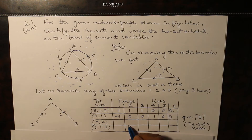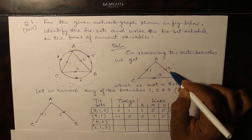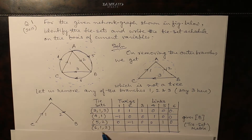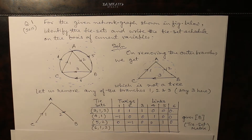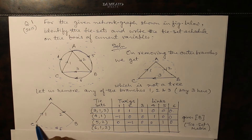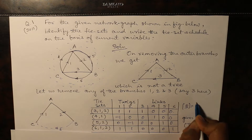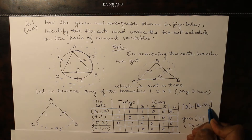Similarly, when we add link 5 to branch 2, the direction of 2 is opposite, and the rest are 0. When we add link 6, branches 1 and 2 are both in the same direction. The matrix B equals B for tweaks and then a unity matrix for links.